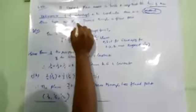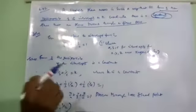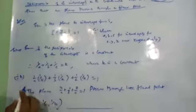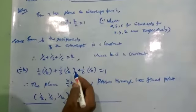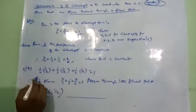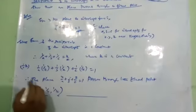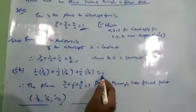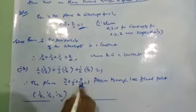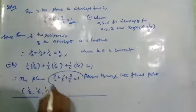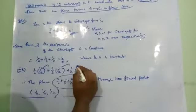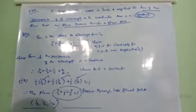So the plane passes through a fixed point. If the plane passes through a fixed point, 1 by k equals x by a plus y by b plus z by c.